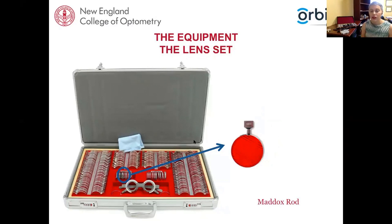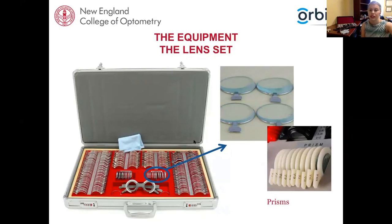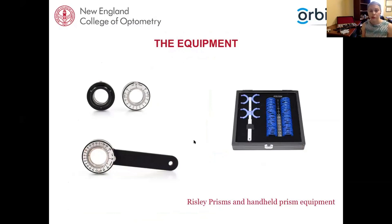You have a Maddox rod in your set — possibly red, green, or clear; they all do the same thing. We won't go through the Maddox rod today — Dr. Geyser in June has two webinars on binocular vision techniques where she'll use it extensively. You also have prisms in your set — again, Dr. Geyser will cover prism use in her lecture. As a side note for her lecture, you can get loose prisms that sit into the trial frame, including Risley prisms for those specific tests, and handheld ones which can also be very helpful.